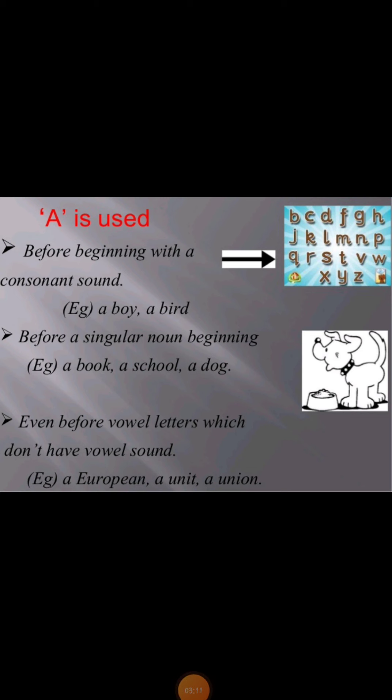Now let us know where we will use a. A is used before a word beginning with a consonant sound. There are 26 letters in the English alphabet. There are 5 vowels: a, e, i, o, u. So a is used before consonant sounds like b, c, d.